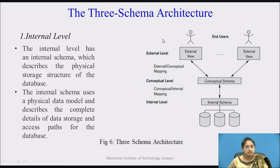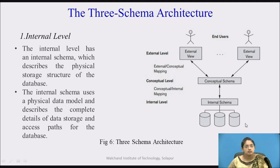So this is the three schema architecture, divided into internal level, conceptual level, and external level. The internal level is the lowest level and describes how data is stored in storage. The access path is also defined at the internal level, and the speed of the database is calculated depending upon the access path.